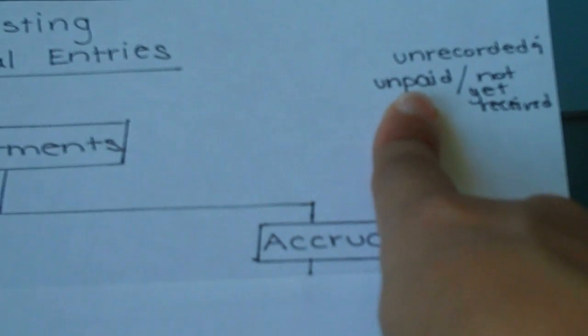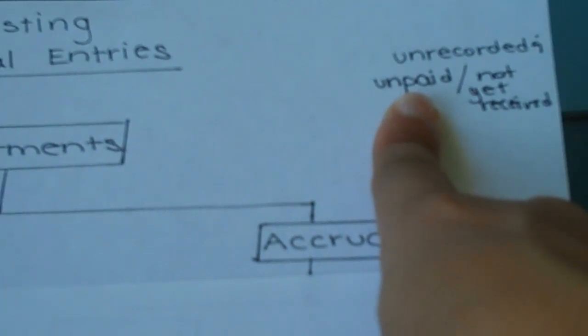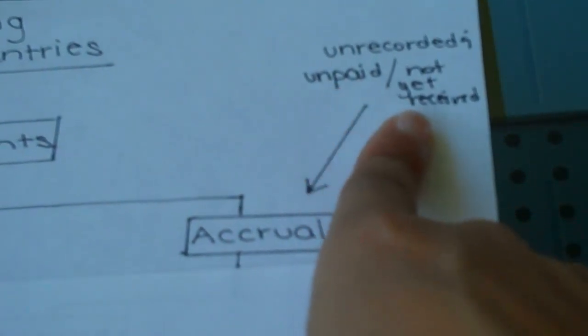It's not recorded and the company has not yet paid it, but we are obligated to do so. At the end of the accounting period, we'll want to make sure that we've recorded all of our expenses and accrued the appropriate liabilities for them.